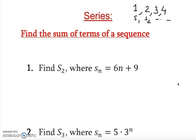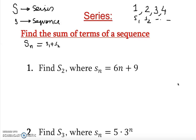There is a difference between capital letter S and small letter s. Small letter s we call a sequence, and capital letter S we call a series. A series (capital S) is equal to the sum of those small letter terms: s₁ + s₂ + s₃ + and so on. This is called series, and this is called sequence.